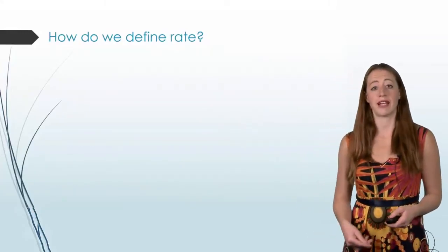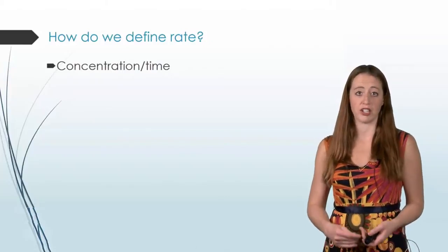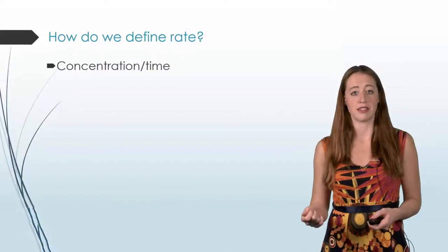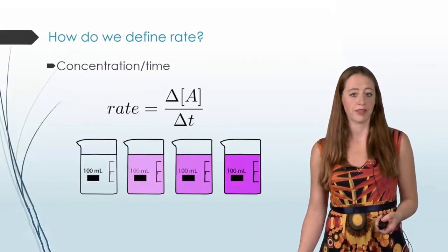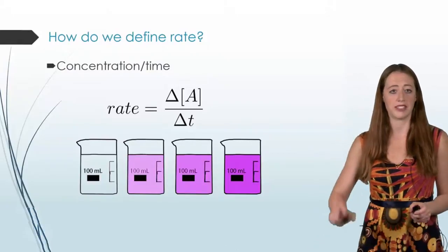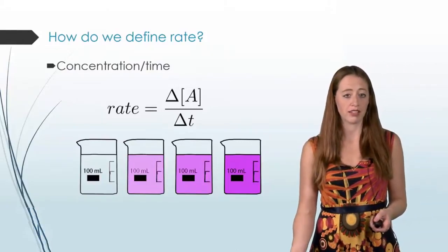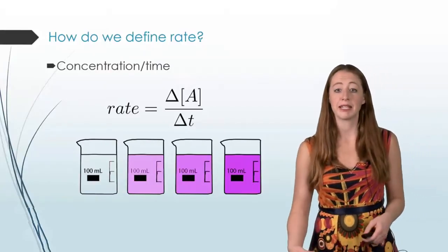So the way that we define rate when we're talking about chemical equations is concentration over time. So just like with the rate of our car driving, it was distance over time. This is concentration over time. And it looks very similar. We still use the little triangle delta. But now we have a concentration of A. It's typically in molarity over our time, typically in seconds.